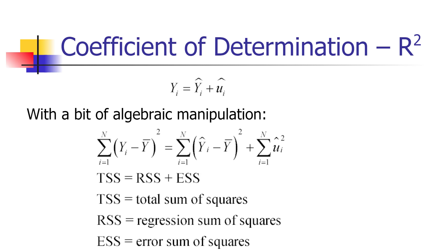The left-hand side is the sum of deviations of y from its sample mean — what we call the total sum of squares. On the right-hand side, we have the regression sum of squares, which is the difference between the predicted value and the mean value — the sum of the squared explained deviations of y from its mean. What's left over is the error sum of squares, the sum of the u-hat squares. This equation tells us that the total sum of square deviations of y from its mean can be decomposed into the proportion explained by the regression line plus the sum of squared error terms, which is the unexplained deviation.